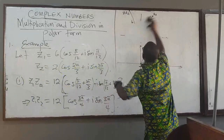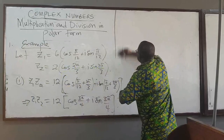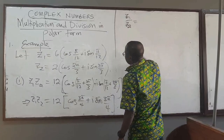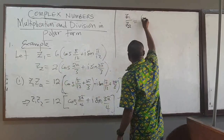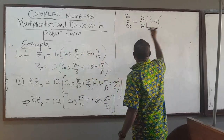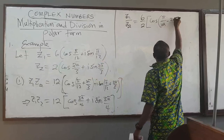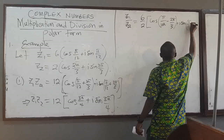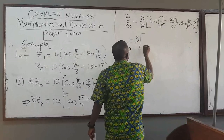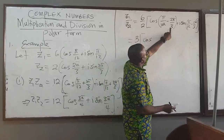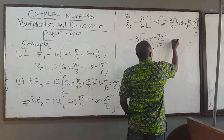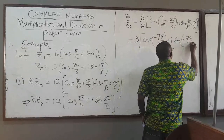If I divide the two complex numbers z1 over z2, I take 6 divided by 2, which gives 3. Then I have cosine of the argument, where the result is the difference: pi over 12 minus 2 pi over 3. And i sine of pi over 12 minus 2 pi over 3. This equals 3 times cosine of negative 7 pi over 12 plus i sine of negative 7 pi over 12.